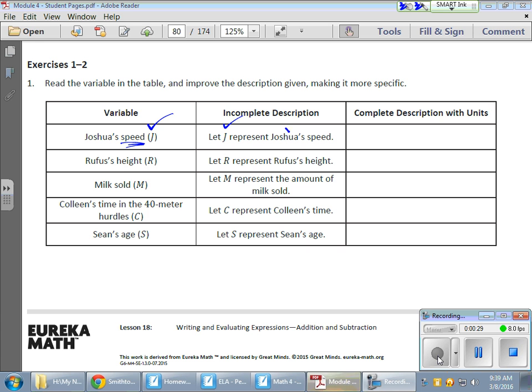J is going to represent Joshua's speed, but what is that speed? Speed can be measured in miles per hour or meters per second or yards per minute or really whatever you want it to be. We just need to make sure that things are specific so that when we come up with an answer, our answer can be very specific, easy to read, and easy to understand.